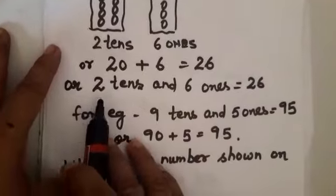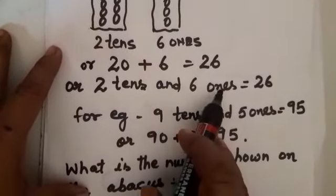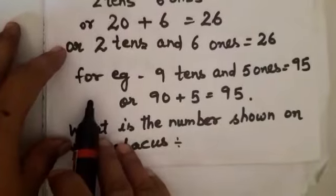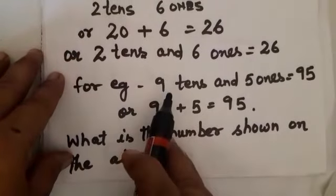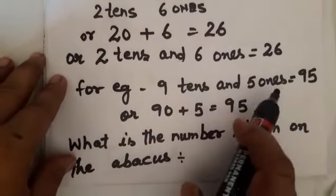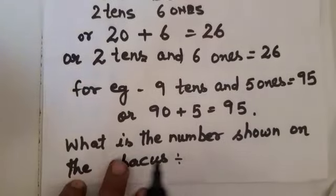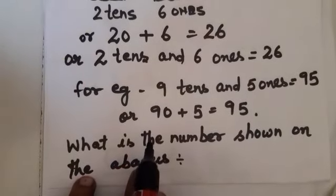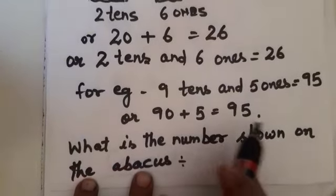Or you can say 2 tens and 6 ones make 26. For example, 9 tens and 5 ones is equal to 95. Or in expanded form you can say 90 plus 5 is equal to 95.